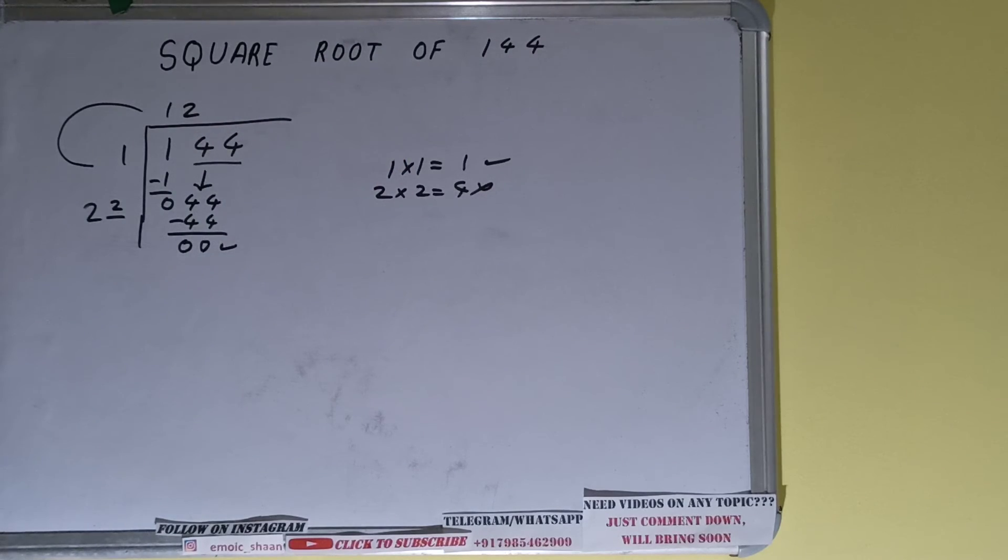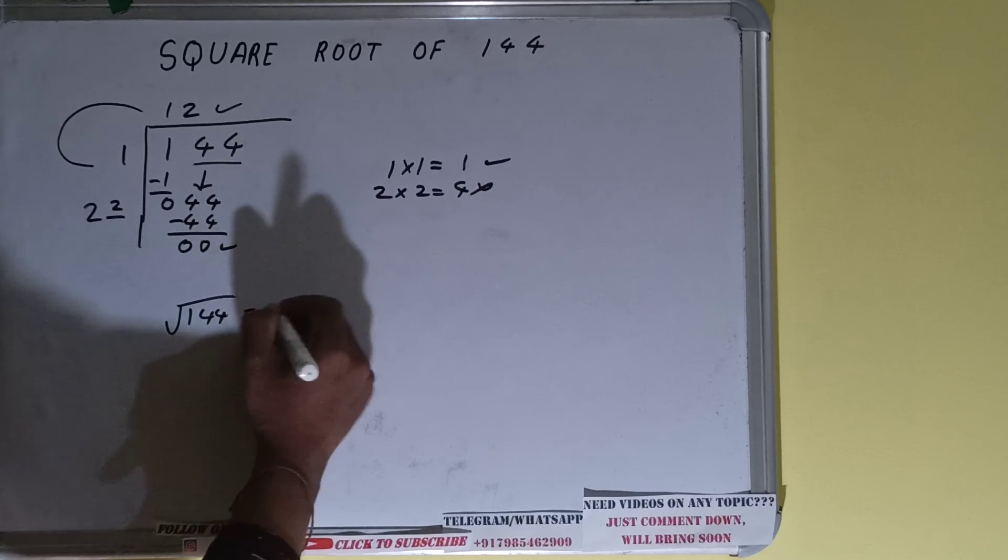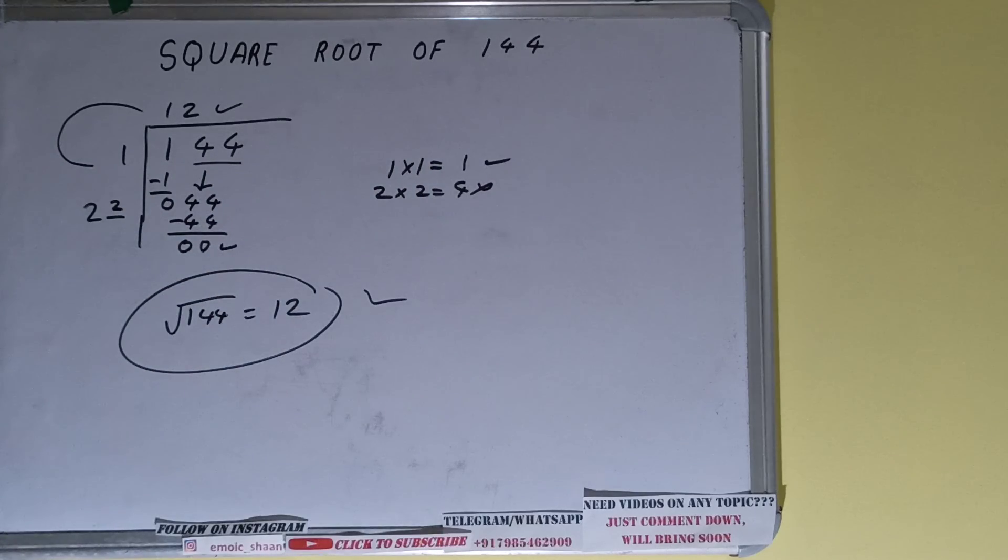So square root of 144 is equal to 12—that will be our answer. So this is all. If you found the video helpful, please do hit the like button, do consider subscribing, and thanks for watching.